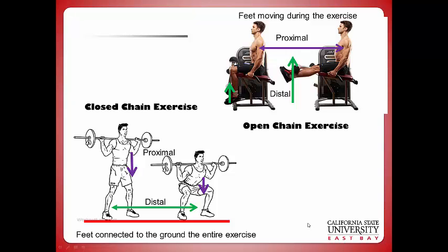This is an explanation of open versus closed chain exercises or motions. Typically we say closed chain means you're connected to the ground — but that could also mean a machine, a pull-up bar, dip bars, anything connected to the ground, TRX even. Open chain is where your distal segment is not locked down in any way, but moves throughout the exercise.